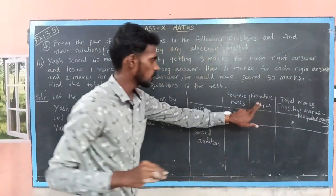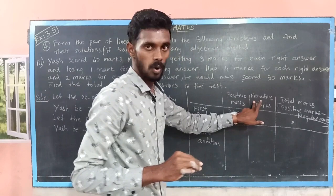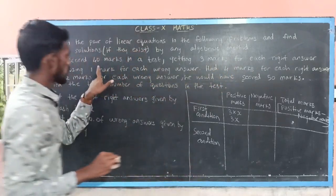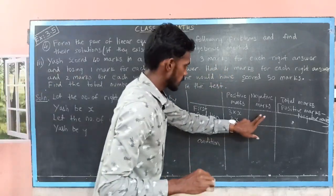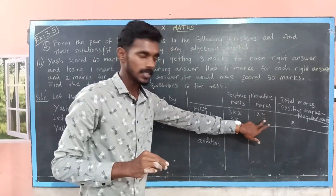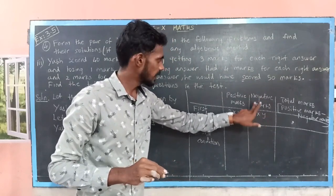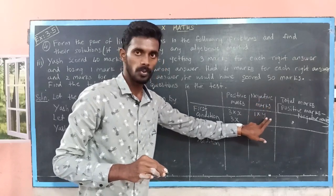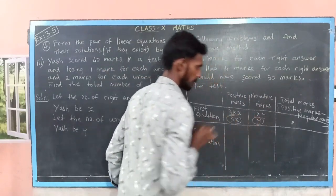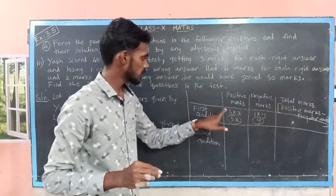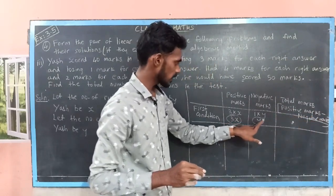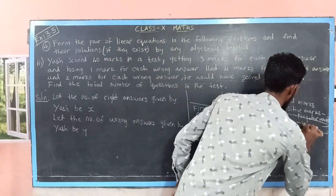Then the negative marks: they are going to reduce the mark for each wrong answer. Since he answered y wrong answers and they reduce 1 mark for each wrong answer, the negative marks can be filled as 1 into y, which is y. So the total marks is positive marks minus negative marks, which is 3x minus y.